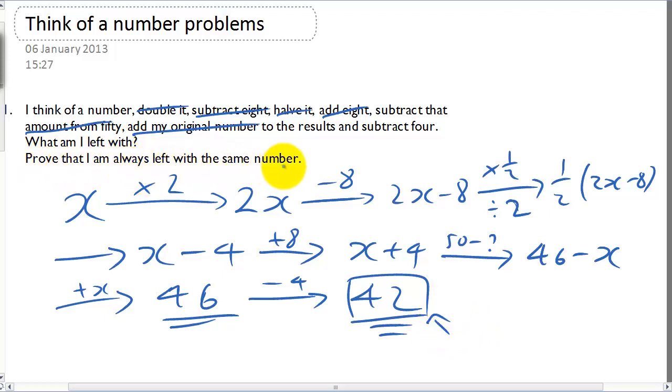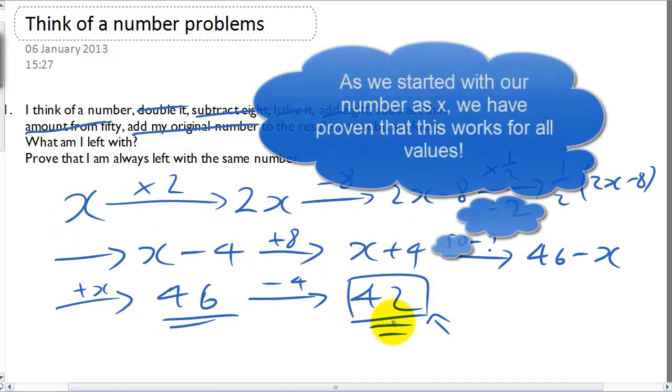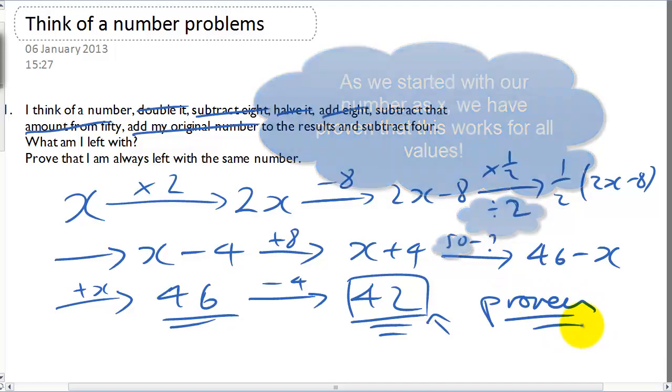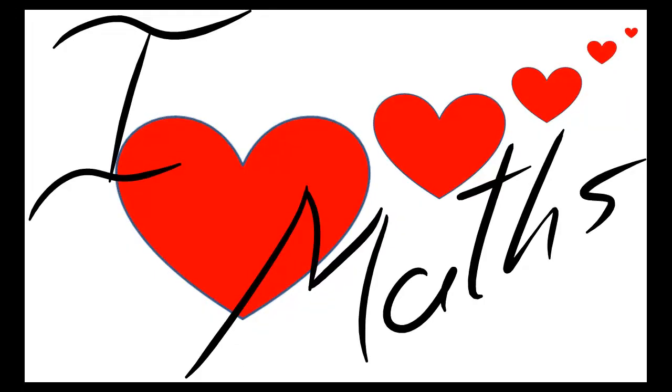Prove I'm always left with the same number. Well, we have done this by doing the flowchart. By starting off with x, it doesn't matter what number we put in, we can see that we get 42. And it's proven.